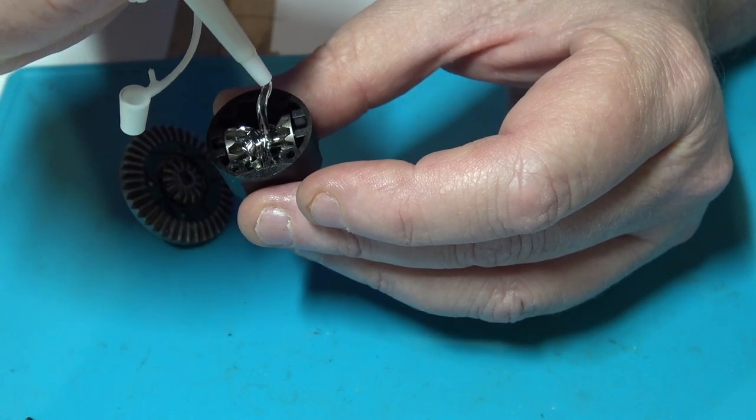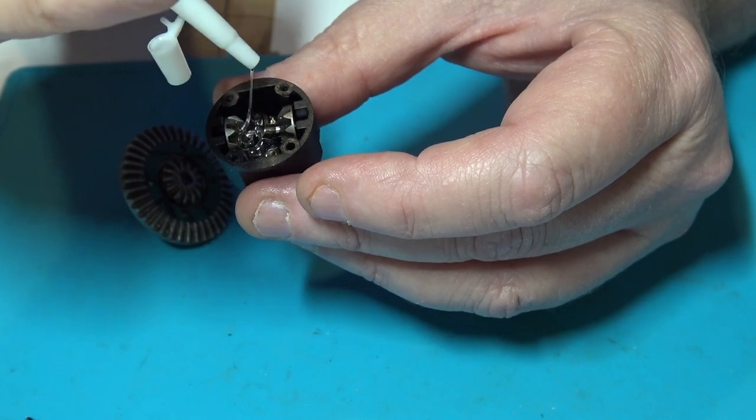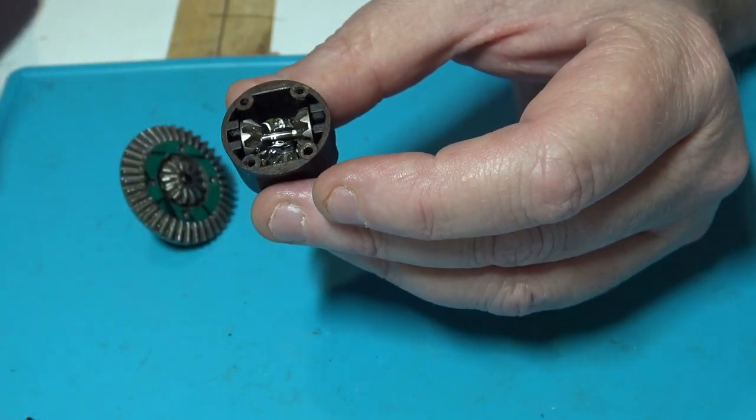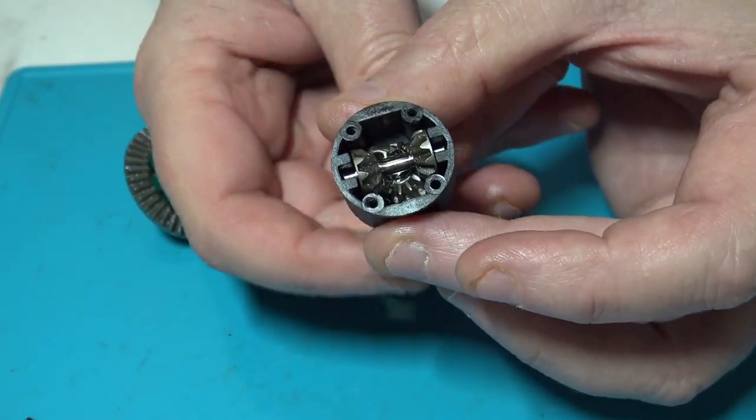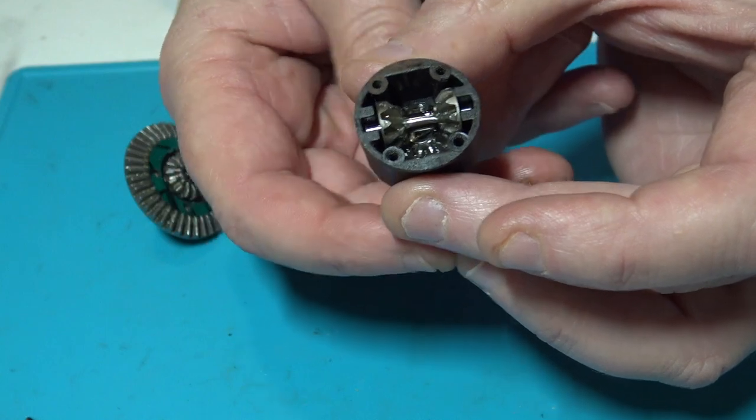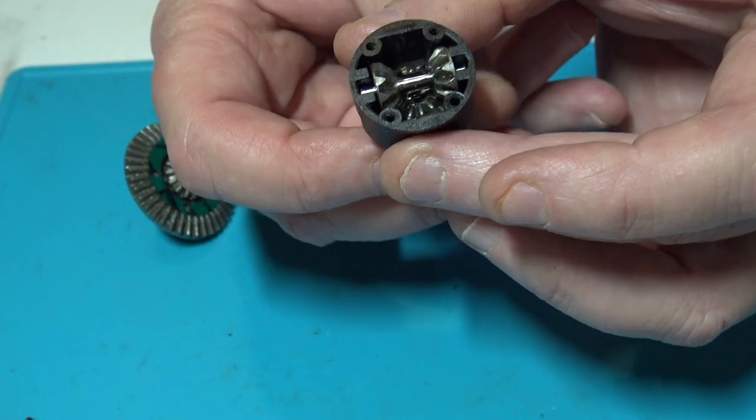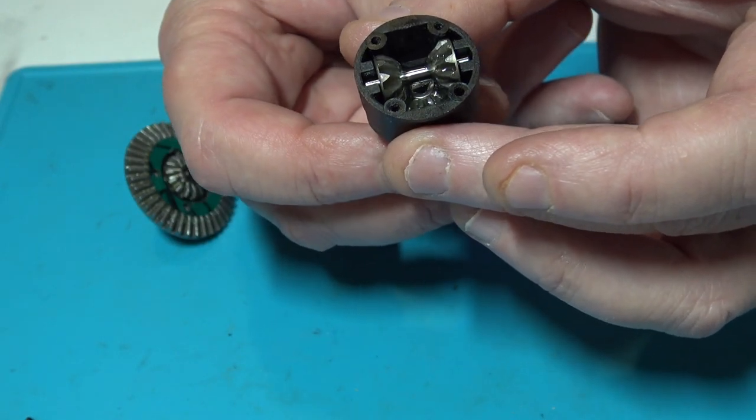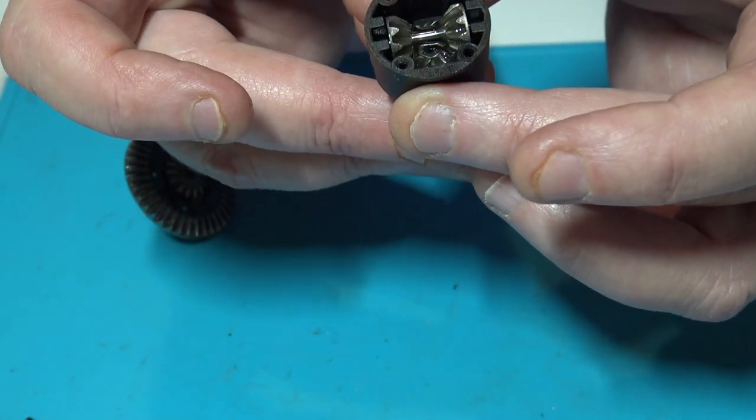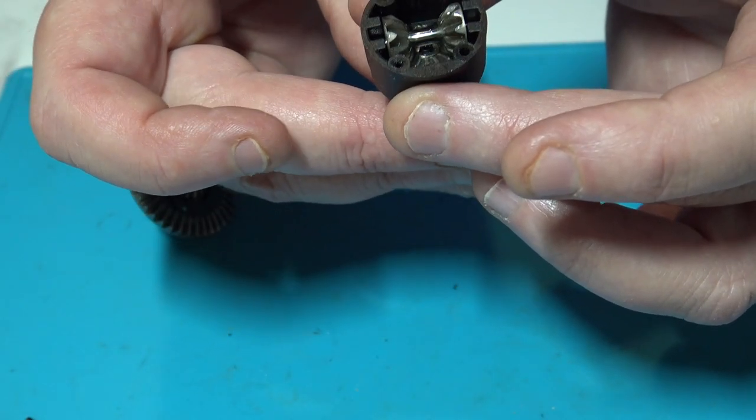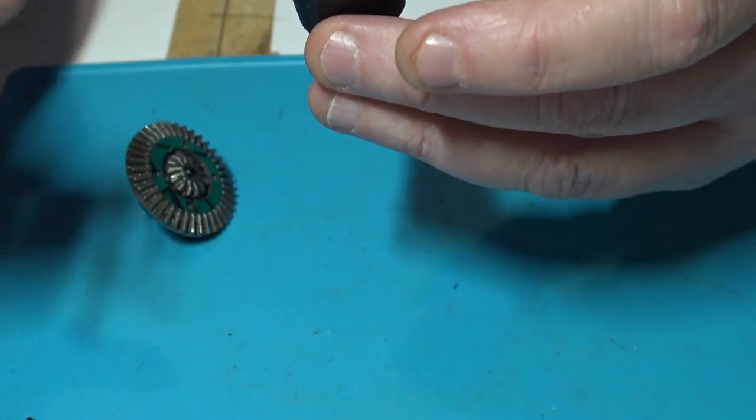I like to put a bunch in and then work it around a little bit. Turn the gears a little bit to get it worked down into the housing. Be careful not to turn too fast or these will try to pop up and out. But this diff fluid is nice and sticky. Go ahead and put some more in here.